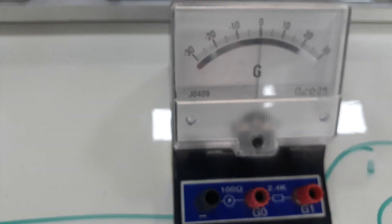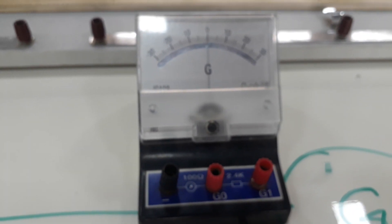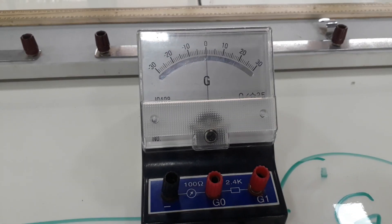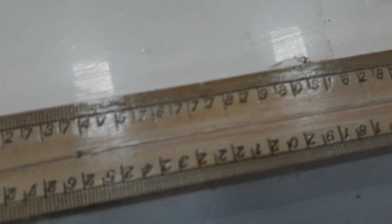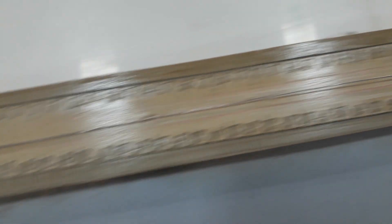I have a galvanometer, which I am going to use to check the direction of the flow of current. Then I have the potentiometer. You can see the constantin wire on the potentiometer. It is lying on top of the meter root.